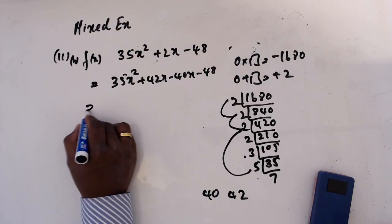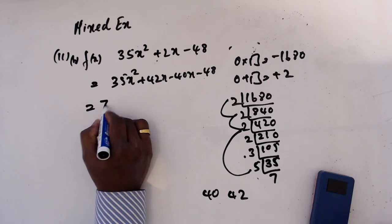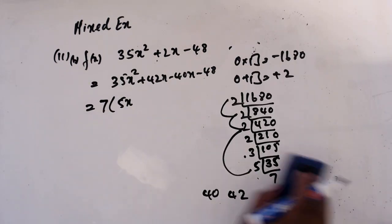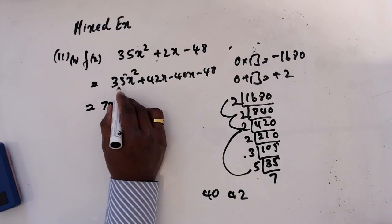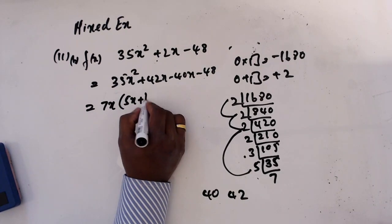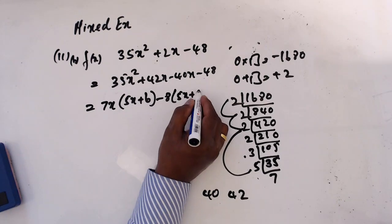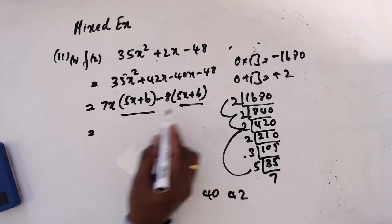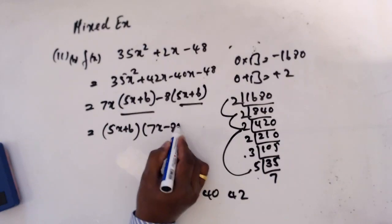When I take 7x out from the first two terms: 7x(5x + 6). Then taking minus 8 from the last two terms: minus 8(5x + 6). So the factorized form is (5x + 6)(7x - 8).